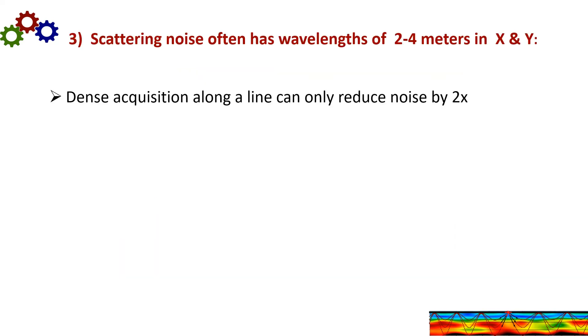Now let's discuss the implications of scattering noise often having wavelengths of only 2 to 4 meters in X and Y. First, dense acquisition along a line can only reduce noise by 2x because you're missing the noise in the other wide dimension. Now 2x is okay, but if noise is 10x or 20x stronger, you're really looking for much better noise reduction than that.